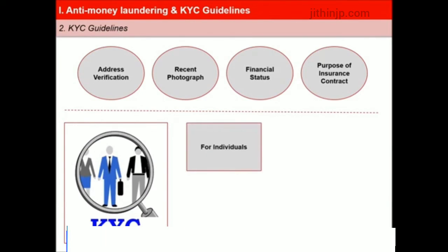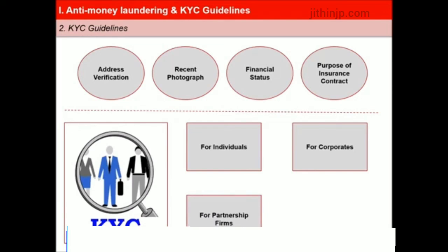In case of individuals, collect full name, address, contact numbers of insured with ID and address proof, PAN number, and full bank details for NEFT purposes. In case of corporates, collect certificate of incorporation, memorandum and articles of association, power of attorney to transact the business, and copy of PAN card. In case of partnership firms, collect registration certificate if registered, partnership deed, power of attorney granted to a partner or employee, and proof of identity of such person. In case of trusts and foundations, the requirements are similar to that of partnership firms. This information also helps in cross-selling of products and is a helpful marketing tool.